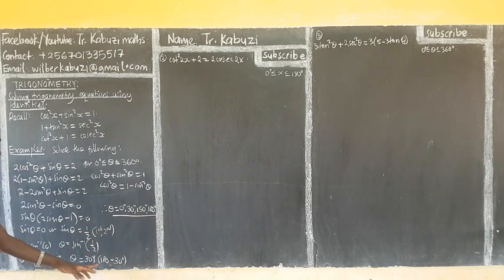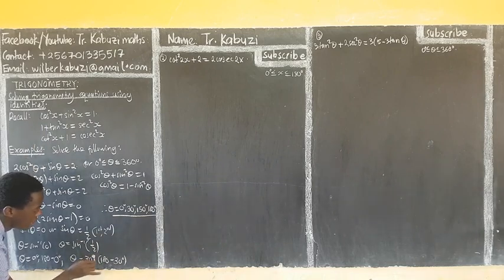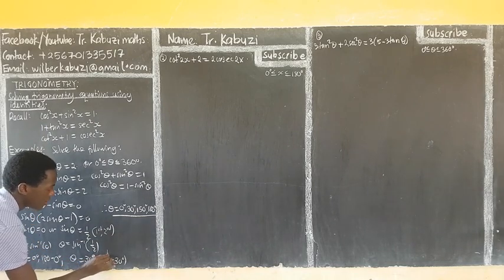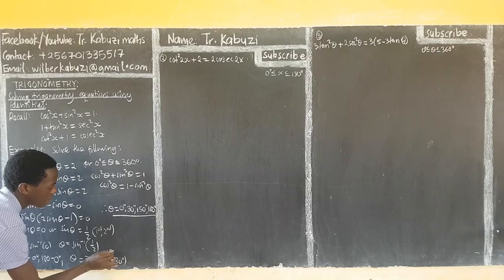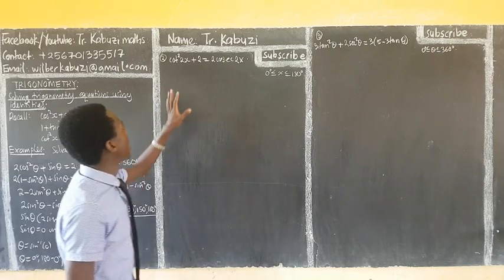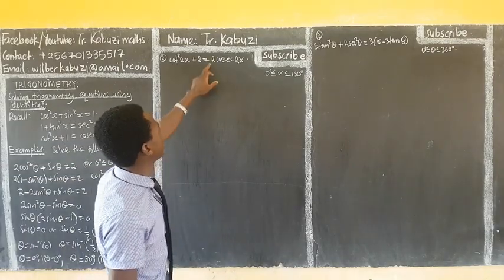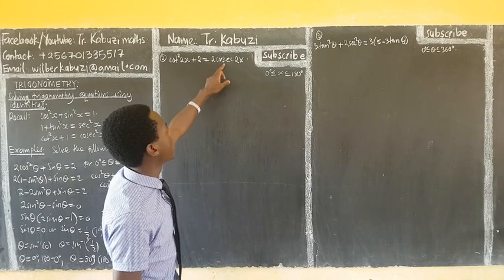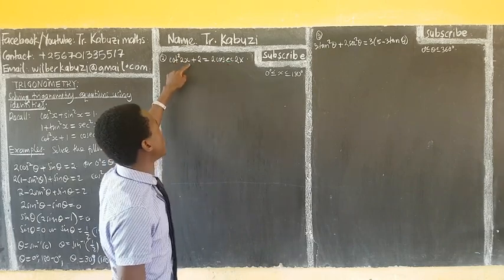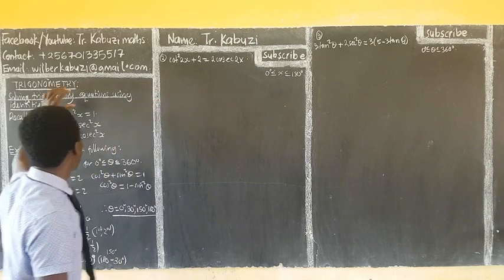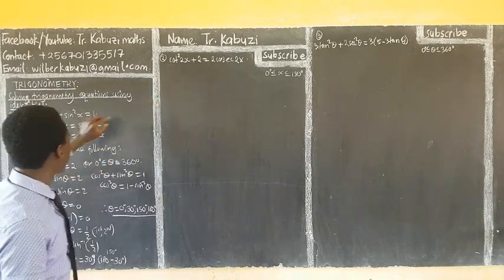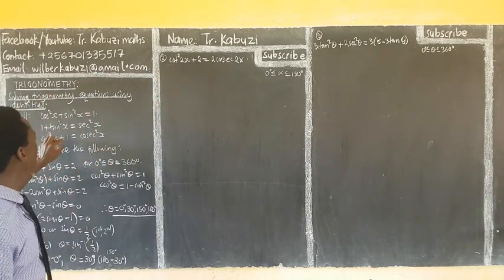So my theta will be all these angles: 0 degrees, then 30 degrees, then 150 degrees, then 180 degrees — as simple as that. Now, with the count of this, I have four values. Now I have cot and cosec. Which one is having the lowest power? These ones are having the same power, but this one will dictate. So I remove this because I want to keep tangent — I'm going to remove this but using the identity. The identity is that 1 plus cot squared theta equals cosec squared theta.